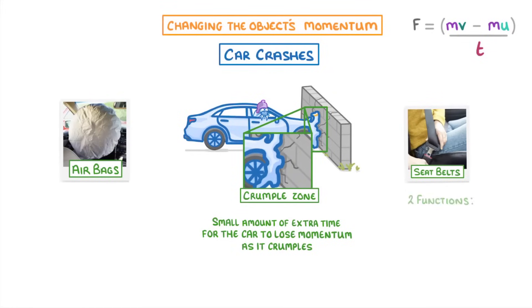Seat belts, meanwhile, have two functions. One is to stop you from physically flying out of the car as it stops, but the other is that they're slightly stretchy, so that you slow down a bit more slowly.